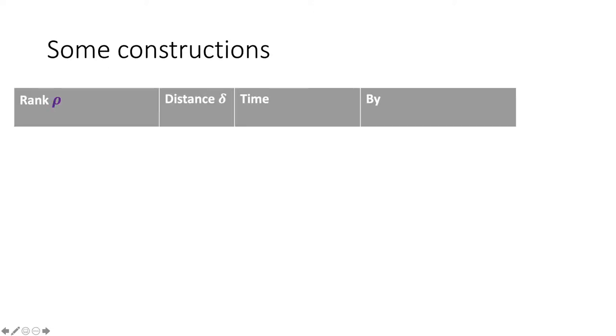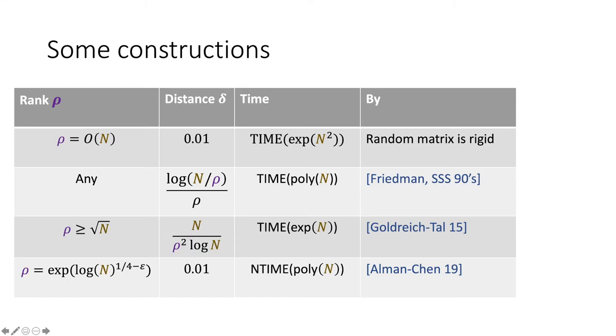What are some known constructions of rigid matrices? First off, a random matrix is rigid, but that's not a very explicit construction. There are many other constructions of rigid matrices. I won't be able to talk about them, but I will link to a survey. But I do want us to focus on this last construction in this table.